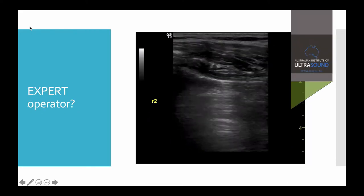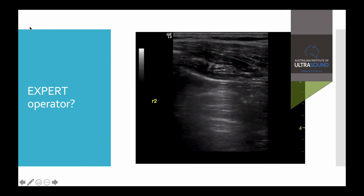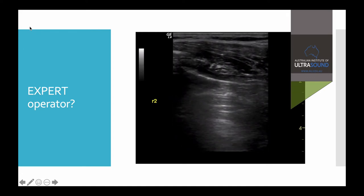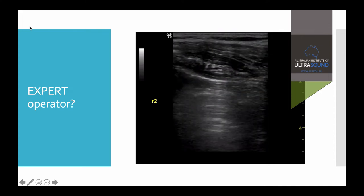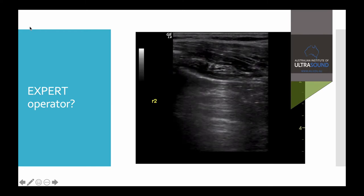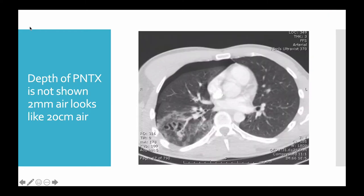Looking for this area where lung tissue hits free air — you'll notice there's no actual break in the white line, there's just an area of sliding and non-sliding. This is a lung point and it's 100% specific. This is the patient we scanned. We certainly were able to see this limited pneumothorax but we didn't really have any idea of the depth. For an ultrasound probe, two millimeters of air looks the same as two centimeters of air. We did however pick up that contusion and also the fact there was no hemothorax.